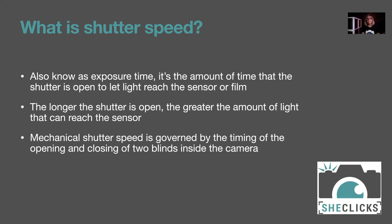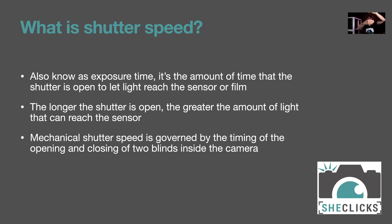Think of it like two curtains in your living room, both big enough to cover the whole window. You close one curtain right across the window, then open it that way and close it with the other one. At very fast shutter speeds the second curtain starts closing before the first has reached the other end — you get a narrow band of light moving down the sensor. That's why you have two curtains with the mechanical shutter.